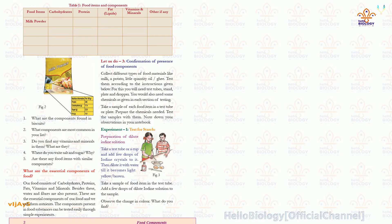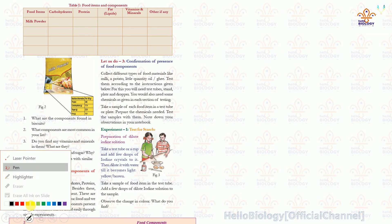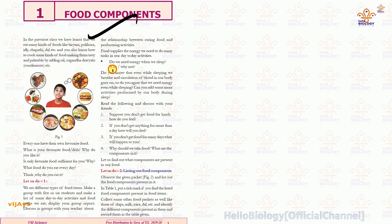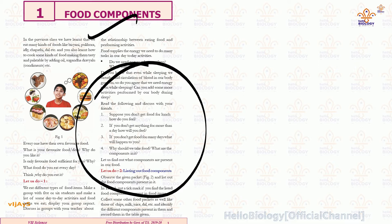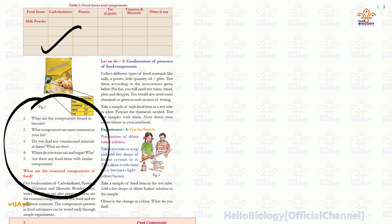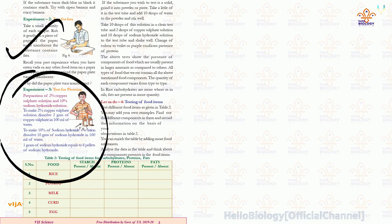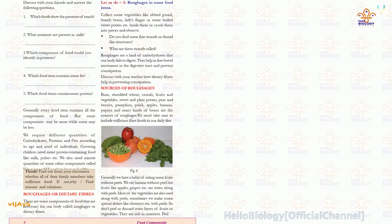Yesterday we discussed starch activity. Today we shall see the importance of other food materials that help us eat daily, and why a balanced diet is important. This tabular column on food components has been completed, along with questions from previous classes. We completed the test for presence of starch, the test for fats, and the test for proteins. Today we look at a small tabular column on whether these nutrients are present or not.